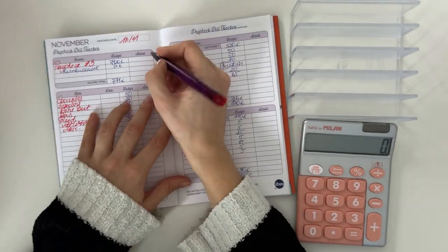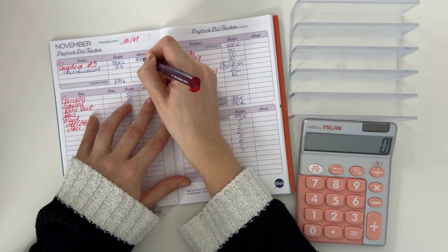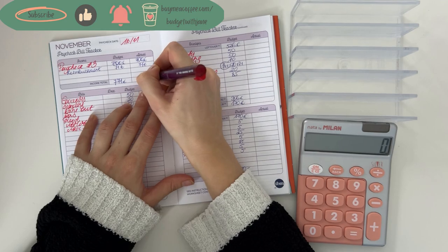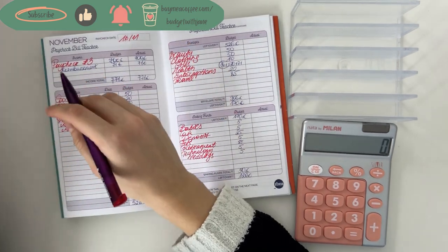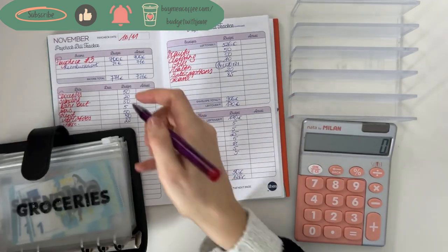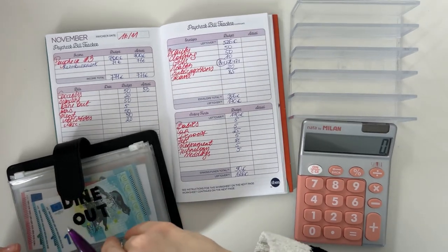So we had 700 to work with from the paycheck and 71 from the reimbursement for my health insurance, so that was 771. So groceries, we spent all of the 50 euros, so there's no rollover. Spending has rollover of 10, 11, and 12.